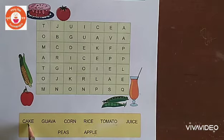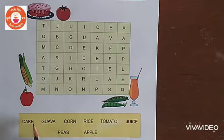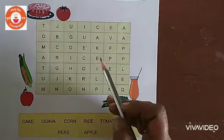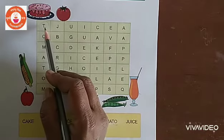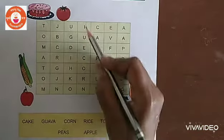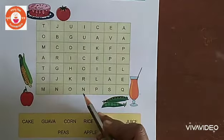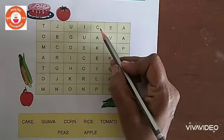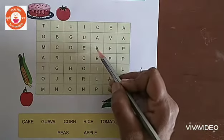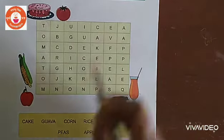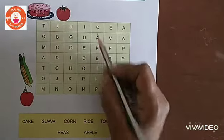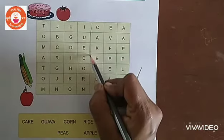First, we'll see the cake. C-A-K-E, cake. So where is C-A-K-E? We can find it horizontally or vertically. C-A-K-E, cake. So circle the cake.